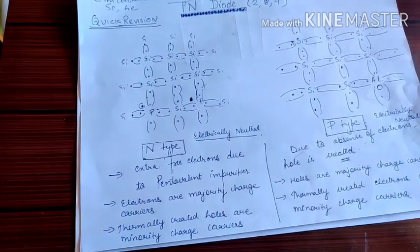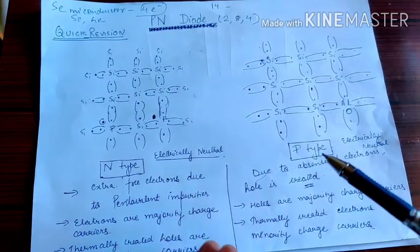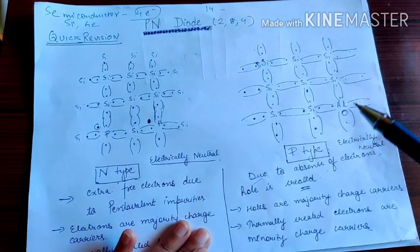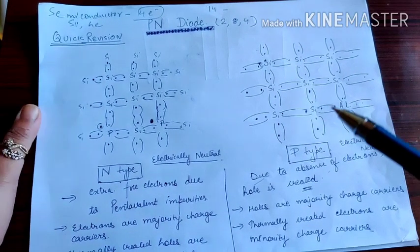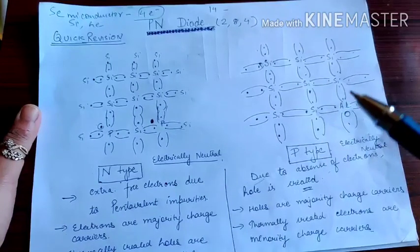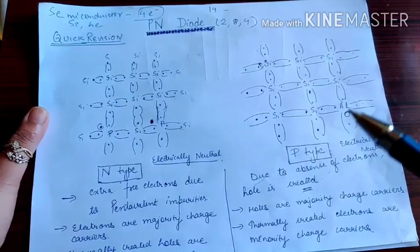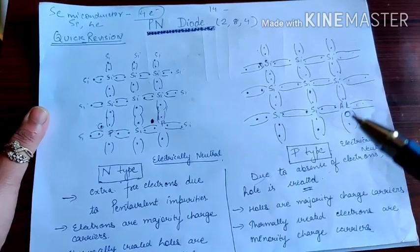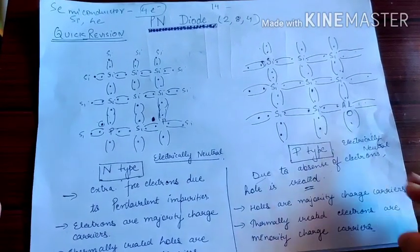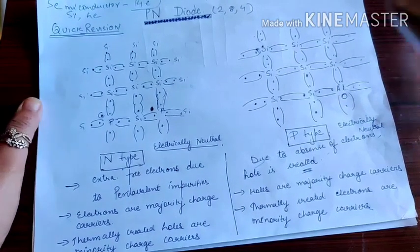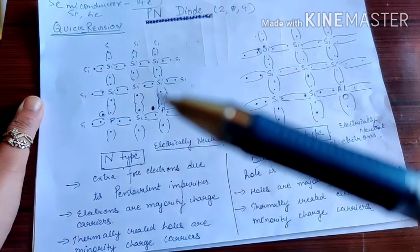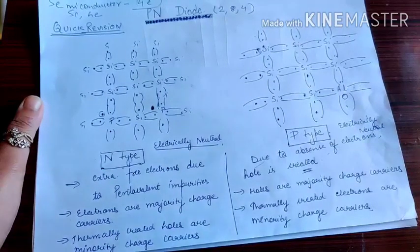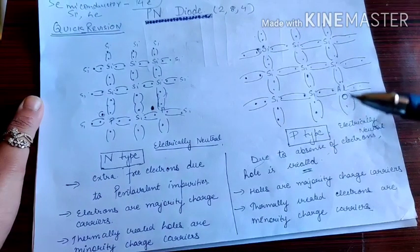And in P-type we have trivalent impurity added. In aluminum, there are 3 valence electrons: 1, 2, and 3. So one bond position is empty — a hole is created. In N-type, electrons are the charge carriers, and in P-type, holes are the charge carriers.